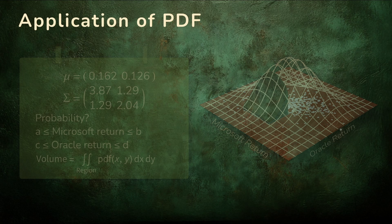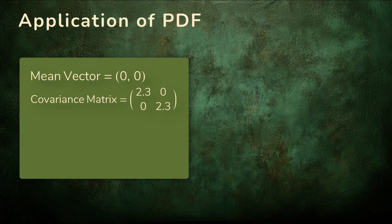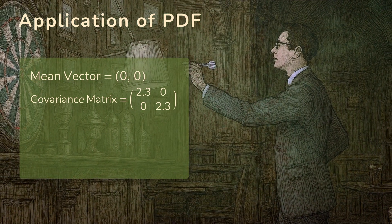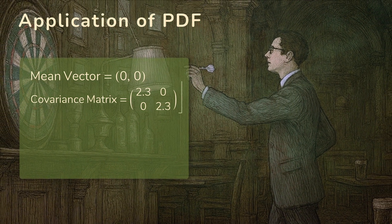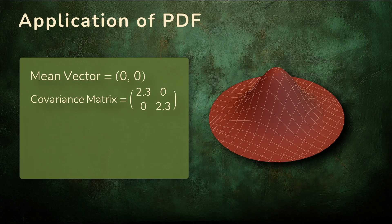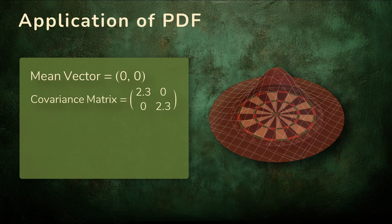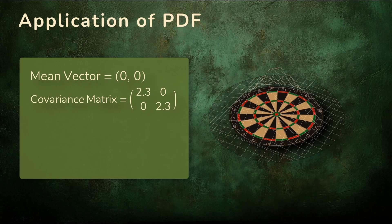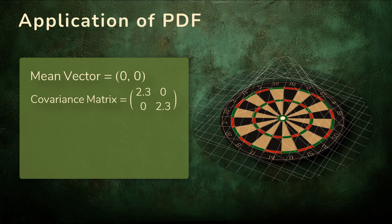Now let's try the same idea with darts. Here is the mean vector and covariance matrix modeling a world-class player's throws. He has both high accuracy and precision. With those values, the PDF again gives us a bell-shaped surface. If we want the probability of landing in the bullseye, we define that region as a circle centered at the origin.